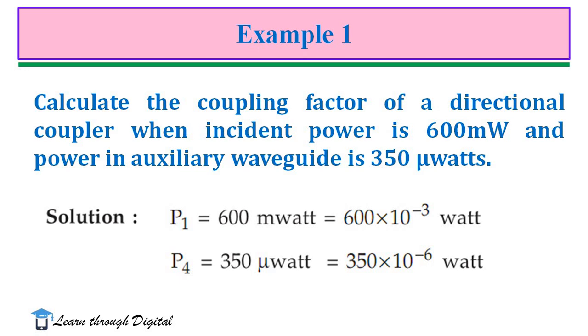The directional coupler when incident power is 600mW. So, P1 is 600mW and power in auxiliary waveguide is P4 350μW.